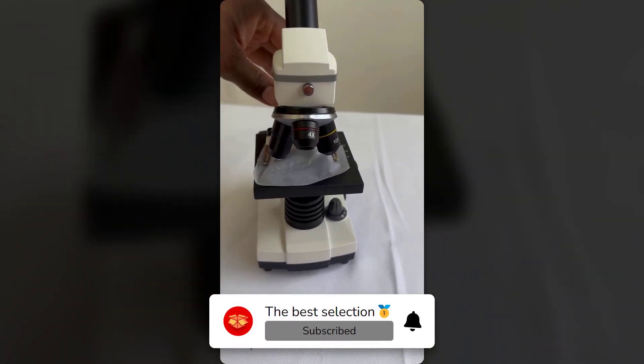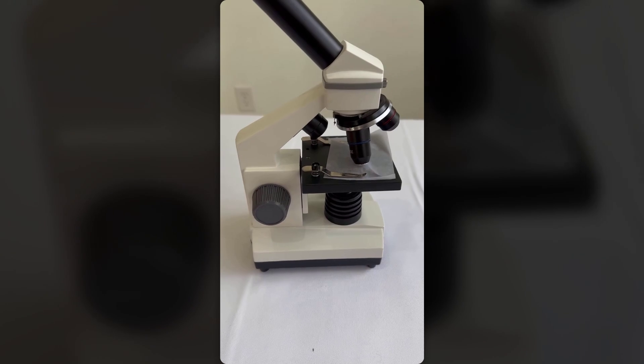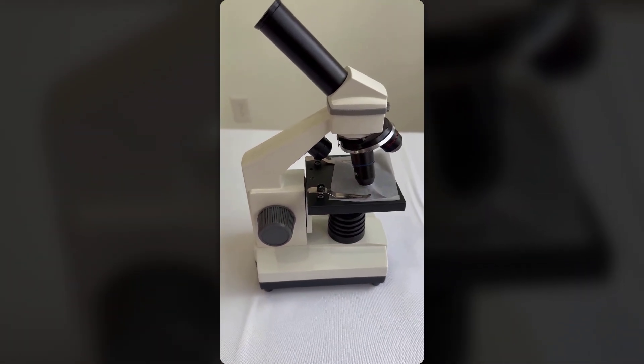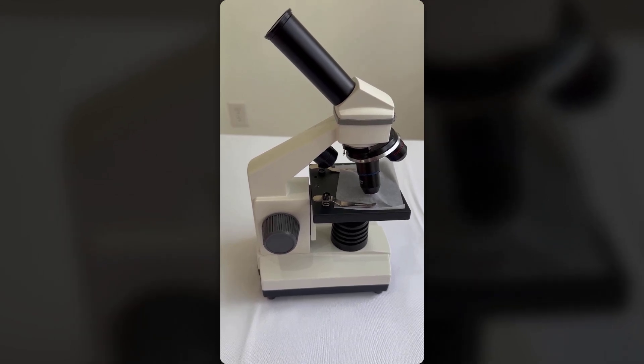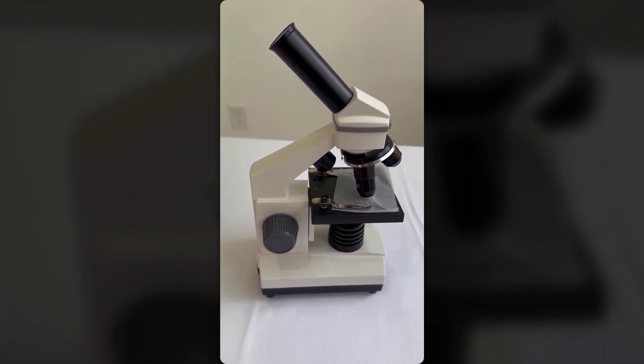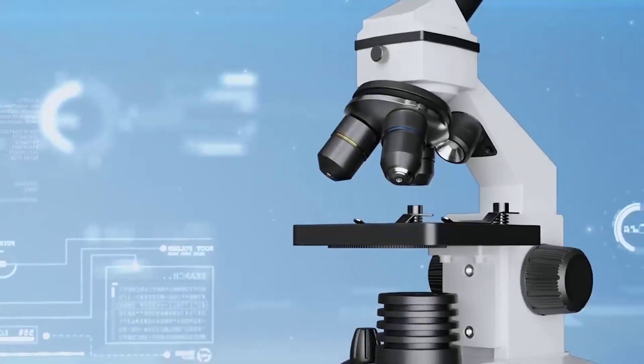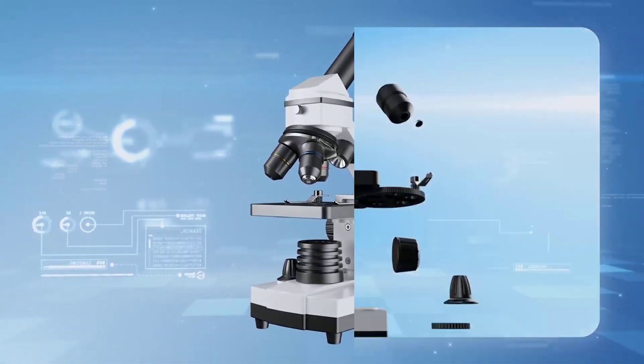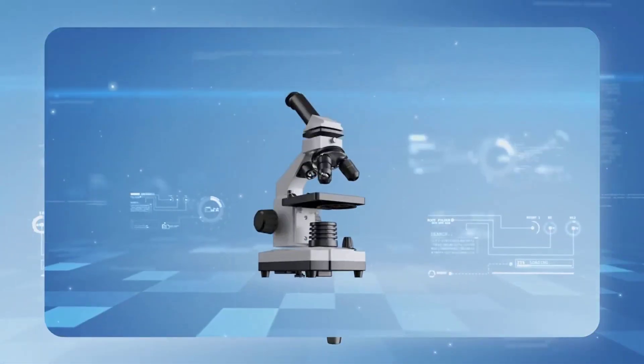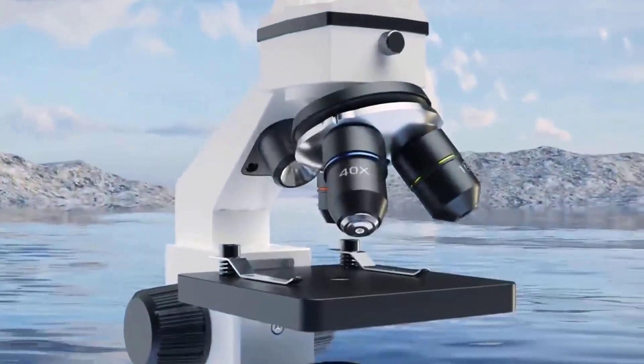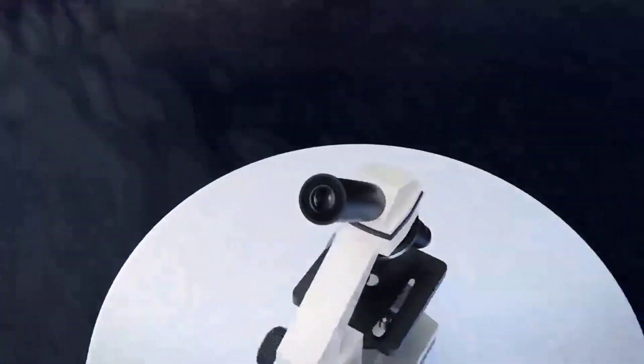Where the Zovtron truly excels is its extensive accessory package. The combination of a phone adapter, Bluetooth shutter, and 28 professionally prepared slides enables immediate exploration straight out of the box. This complete setup proves invaluable for sparking scientific curiosity, especially when introducing young minds to microscopic discoveries like viewing cellular structures for the first time.